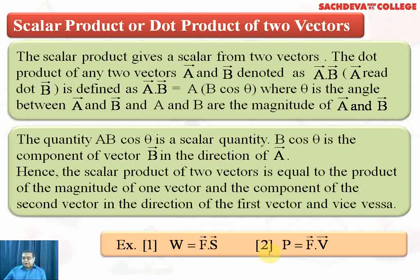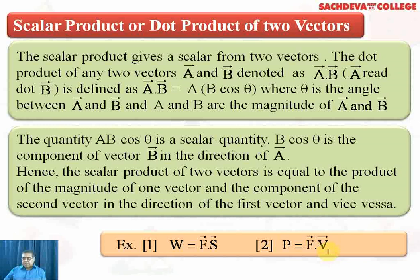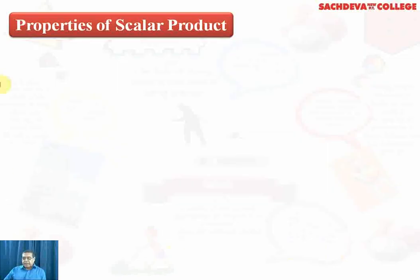The dot product of the two vectors — force and displacement — will give work done. However, work done is a scalar. Power P is also a scalar, but it is equal to the dot product of force and velocity. As explained earlier, power is calculated by the magnitude of force and velocity.